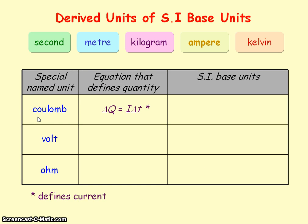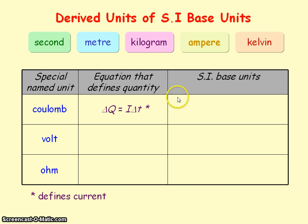The coulomb is the unit of charge, and the flow of charge equals current multiplied by the time taken. So the coulomb is equal to the units of current — amperes — multiplied by the units of time — seconds. So a coulomb is equal to an ampere second.